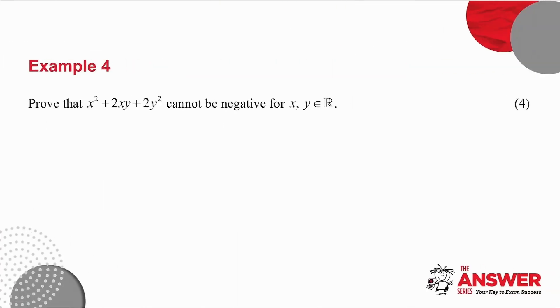Example number 4 is a problem-solving question. It says to you, prove that x squared plus 2xy plus 2y squared cannot be negative for x and y real numbers. Pause the video. Try this, and then we'll look at it together.